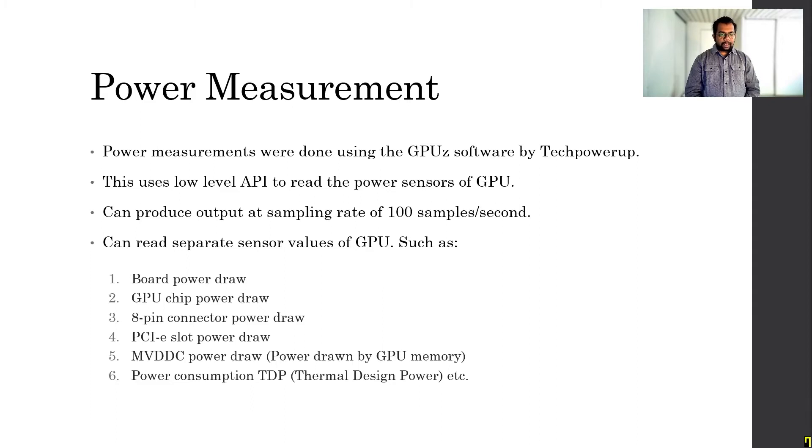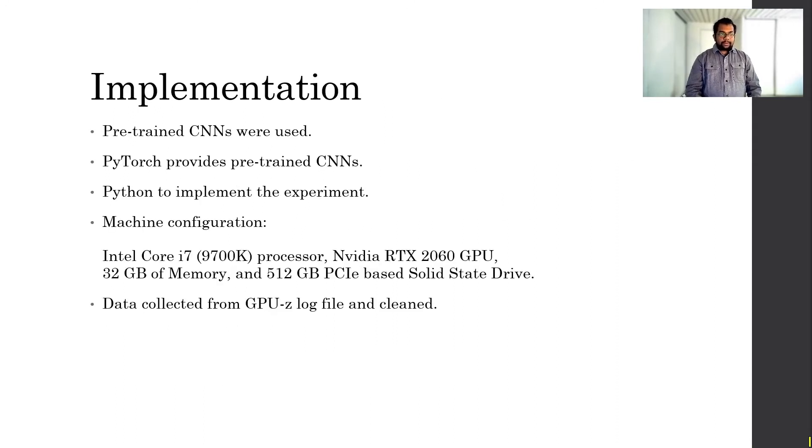We'll be doing some power measurements in our work. We use a software developed by TechPowerUp, called GPU-Z. This software can read the sensors, the power sensors available in the GPU. It uses low-level API, mostly NVML API, for reading the GPU sensors. It can produce a sampling rate of 100 samples per second. The sensors that we'll be focusing on in our work are board power draw, GPU chip power draw, 8-pin connector, PCI Express slot power draw, NVDC power draw, which is power drawn by GPU memory, and power consumption TDP, which is thermal design power. We'll be collecting this power information while we are running the neural networks, and then using that power data for our further classification.